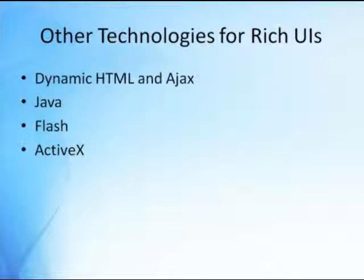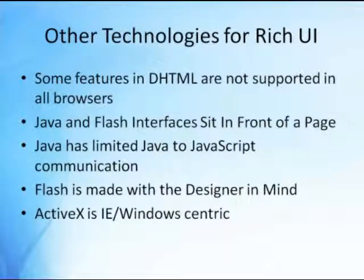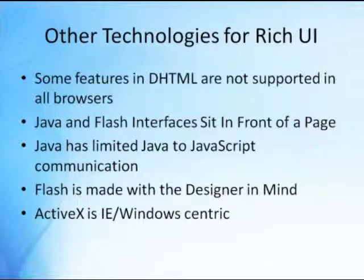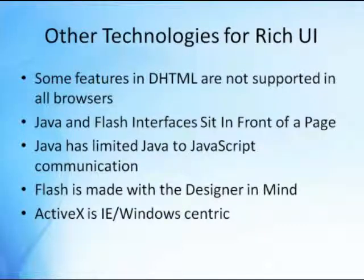There are a number of other technologies you could use if you're trying to make a rich UI: Dynamic HTML mixed with Ajax, Java, Flash, or ActiveX. With Dynamic HTML, you'll find that some features are supported in some browsers but not others, so you could end up with an inconsistent user experience. Java and Flash interfaces both sit on top of the browser — they don't really integrate into it. For example, you could not create an HTML button control overlapping on top of Flash or Java. And if Java wanted to communicate with other elements on the page, it is limited to doing that using JavaScript, whereas Silverlight can actually interact with other elements on the page and can be given access to the page's DOM.